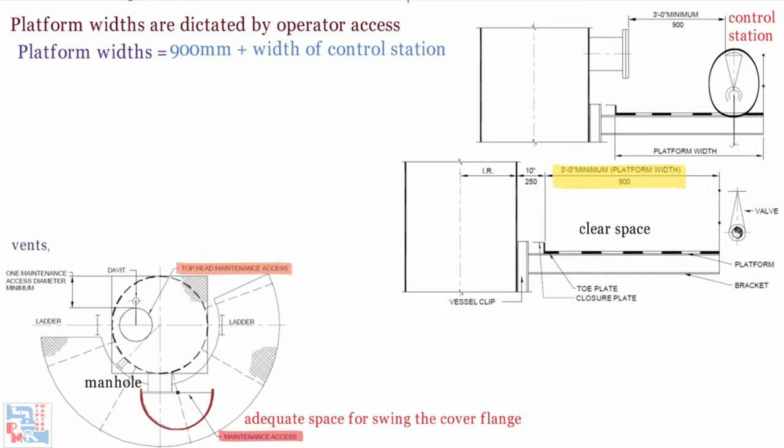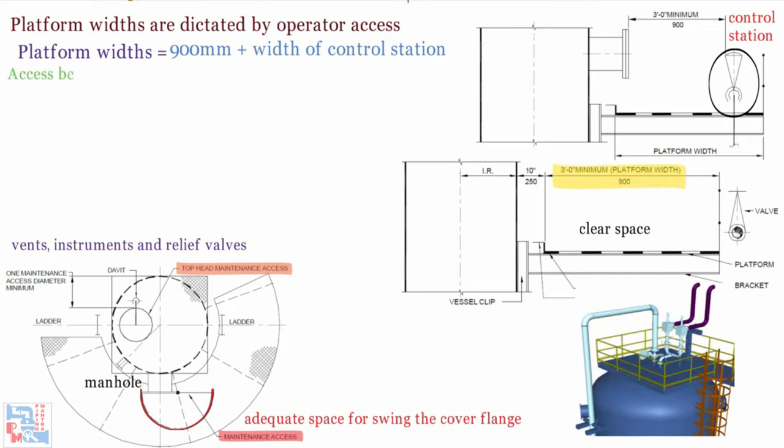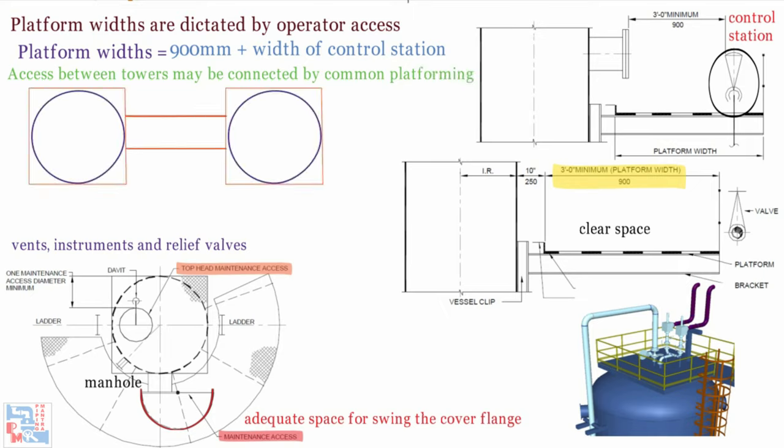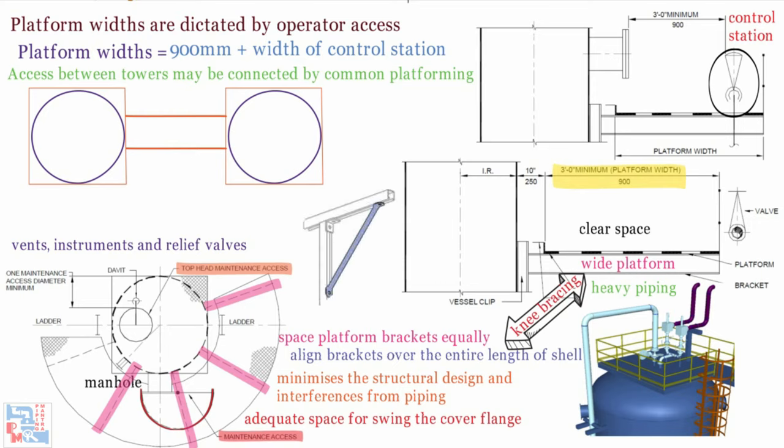Top head platforms for access to vents, instruments and relief valves are supported on head by trunnions. Access between towers may be connected by common platforming. It is preferable to space platform brackets on tower equally and to align brackets over each other over the entire length of shell. This minimizes the structural design and interferences from piping. On very wide platforms or those that support heavy piping loads, knee bracing is required in addition to the usual platforms steel. The potential obstruction immediately under the knee brace must be kept in mind during platform design.